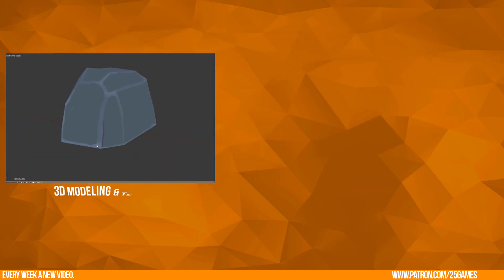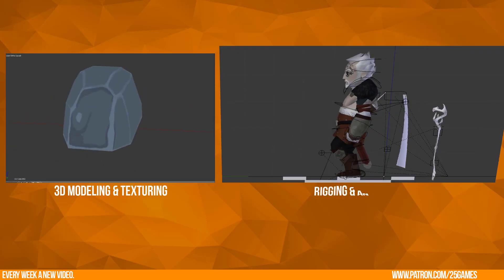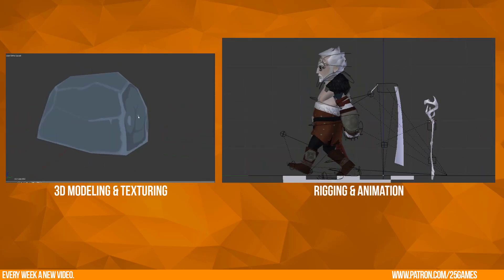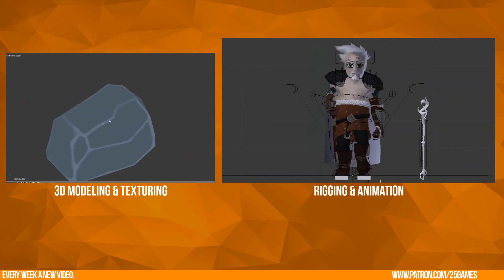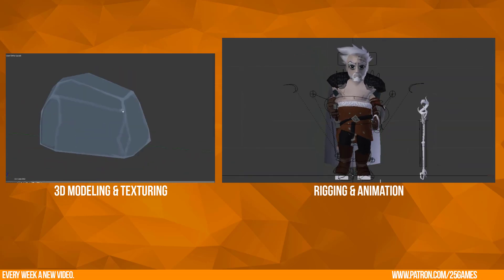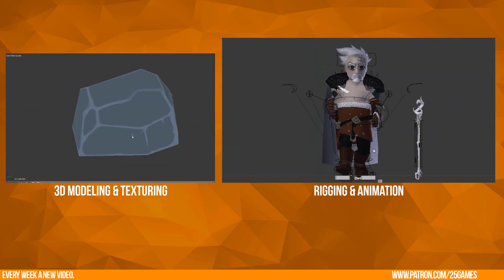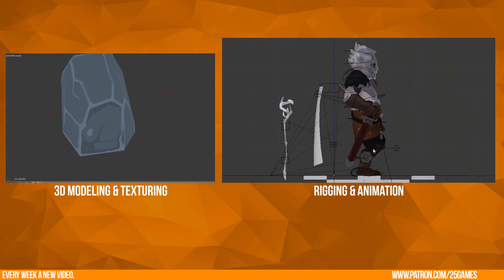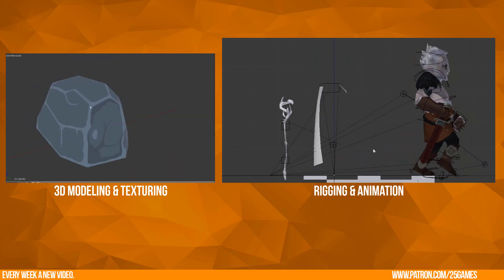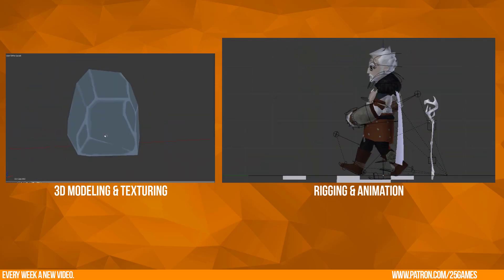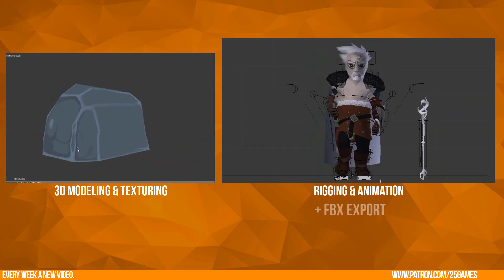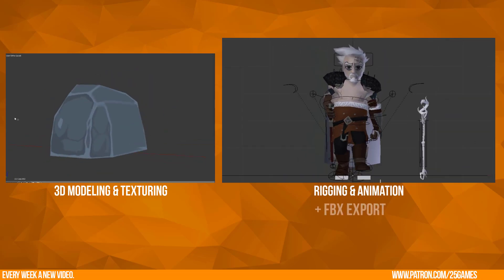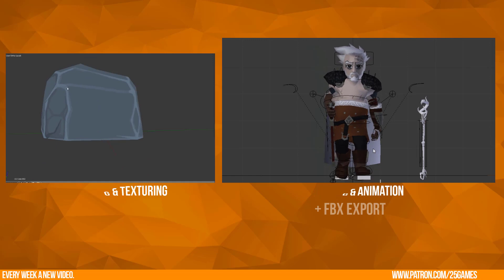3D modeling and texturing is one part of CG art, but rigging and animation is another big thing which I constantly avoid to learn. Very important is also to know what you are planning to do with the rig and the animation. Rigging just for rendering is different than a rig for a game engine which you need to export. In this series the focus is on exporting the created rig and animation.